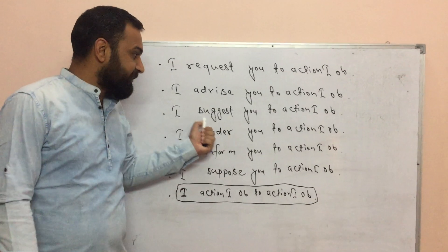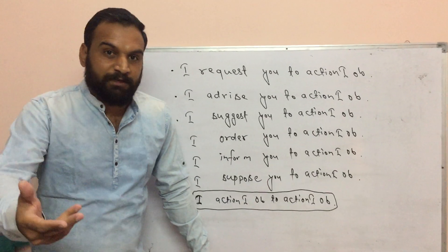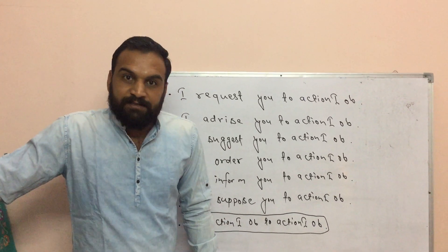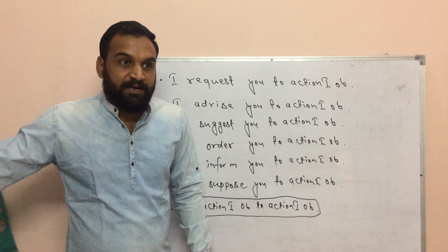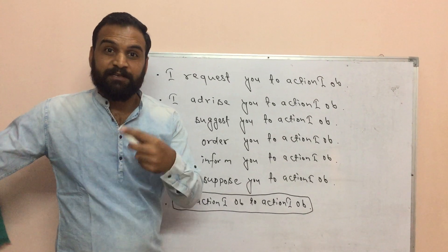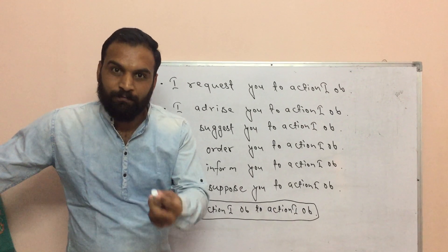The next is I suggest you to action first or object. When you give someone a suggestion, these two are basically the same, we've just written them separately. Like I suggest you to buy a dictionary. I suggest you to start doing something in your life. I suggest you to get a job. I suggest you to learn English at home. Like that.